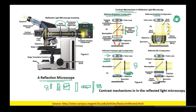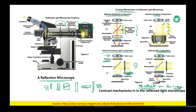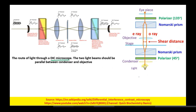Another type is DIC microscopy — Differential Interference Contrast. DIC microscopy helps create a 3D effect on the image. We have not discussed this 3D effect in upright microscopy yet, so next we will discuss DIC microscopy. This slide shows the basics of DIC microscopy.